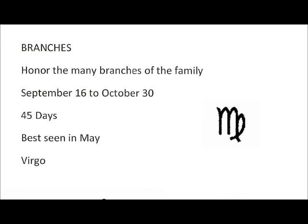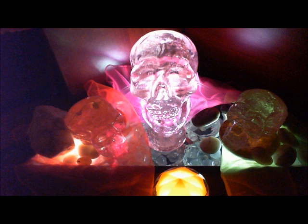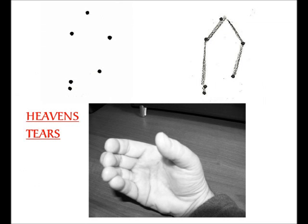Branches. Honor the many branches of the family. September 16th to October 30th. Duration is 45 days. Best seen in May. Formerly known as Virgo. Heaven's tears. Death. Grief. Sorrow. October 31st to November 22nd. Duration is 23 days. Best seen in June. Formerly known as Libra.